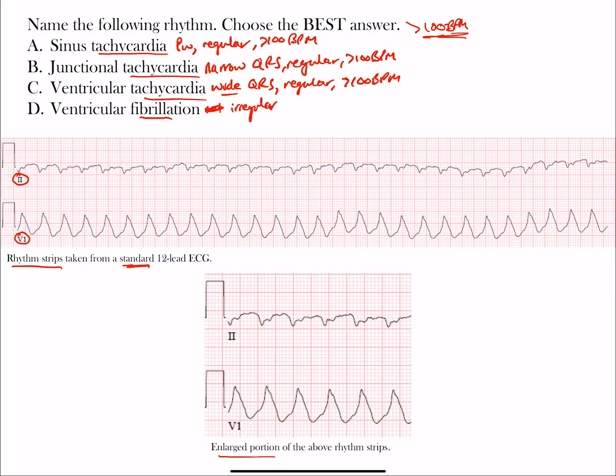If we look at the rhythm strip, take a look at V1. You notice if we take those tall peaks of the waves - this R wave to this R wave, that's our R-to-R interval. These are positive complexes. Here's the next R-to-R interval. If you were to measure all of these out, you'd see that all these intervals are the same, meaning this is a regular rhythm. This is certainly not ventricular fibrillation, so D is not correct.